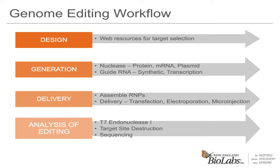Then we will discuss the different methods of generating Cas9 nuclease and guide RNAs. Once the nuclease and sgRNA are made, we need to get them into the cells. This is the next part of the workflow, and we will discuss some of the options for delivery of these complexes. Finally, we will discuss the analysis of the gene editing experiments — that is, how to determine the efficiency of your gene editing experiments.